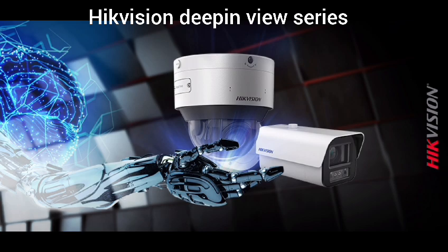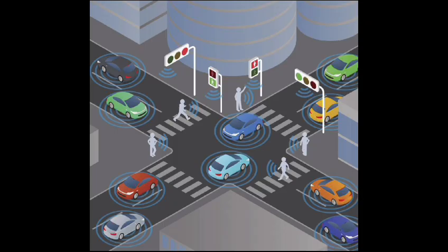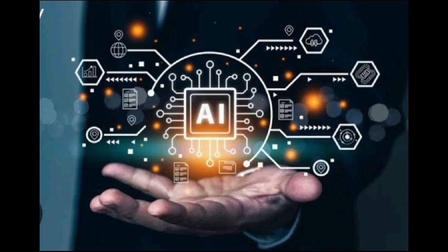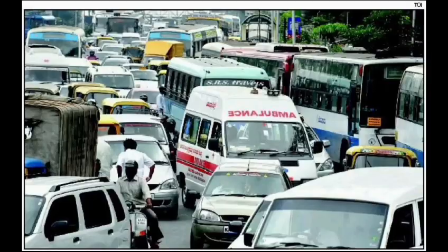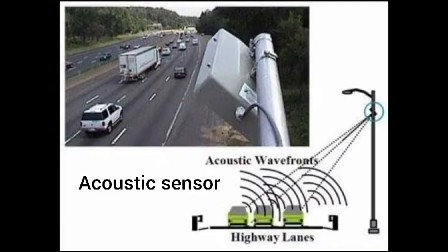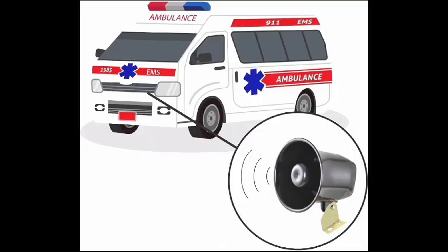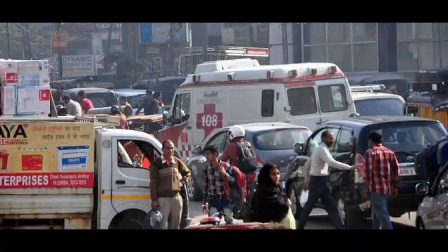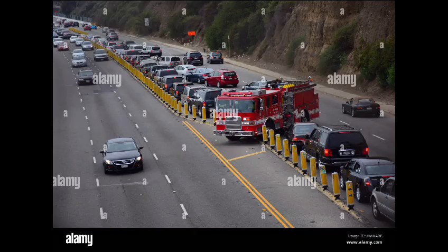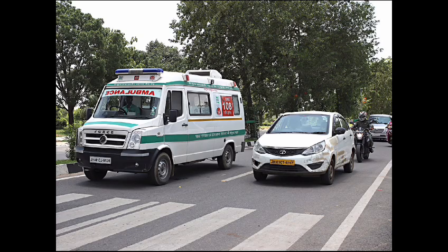Here, we are using the Geek Vision Deep-in-View series camera to detect vehicle density at traffic signals accurately — it is an advanced AI camera. For emergency situations, we use an acoustic sensor to detect sound from emergency vehicles like ambulances, fire engines, etc. The camera also detects whether it is an emergency vehicle or another vehicle.